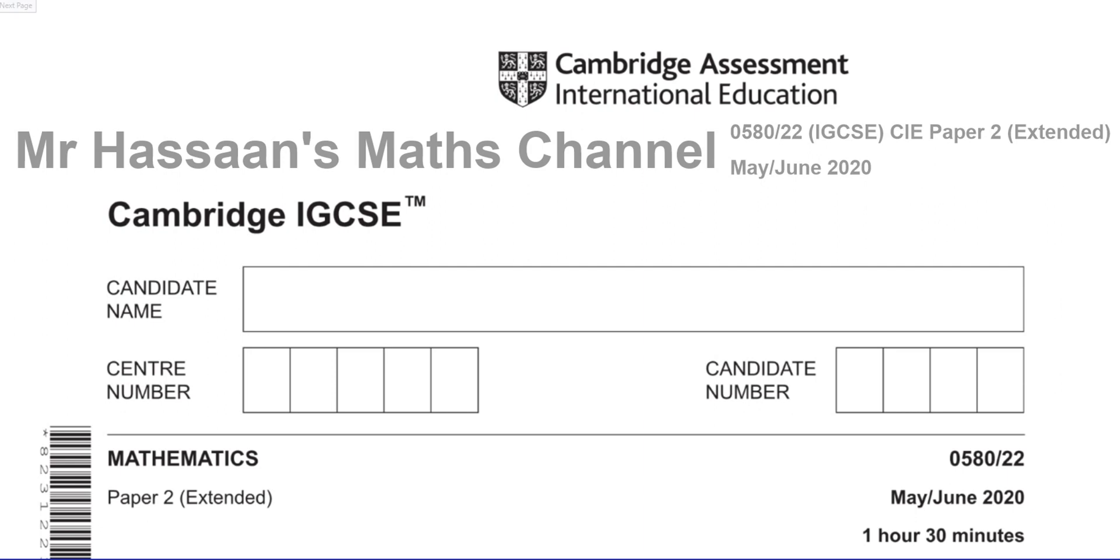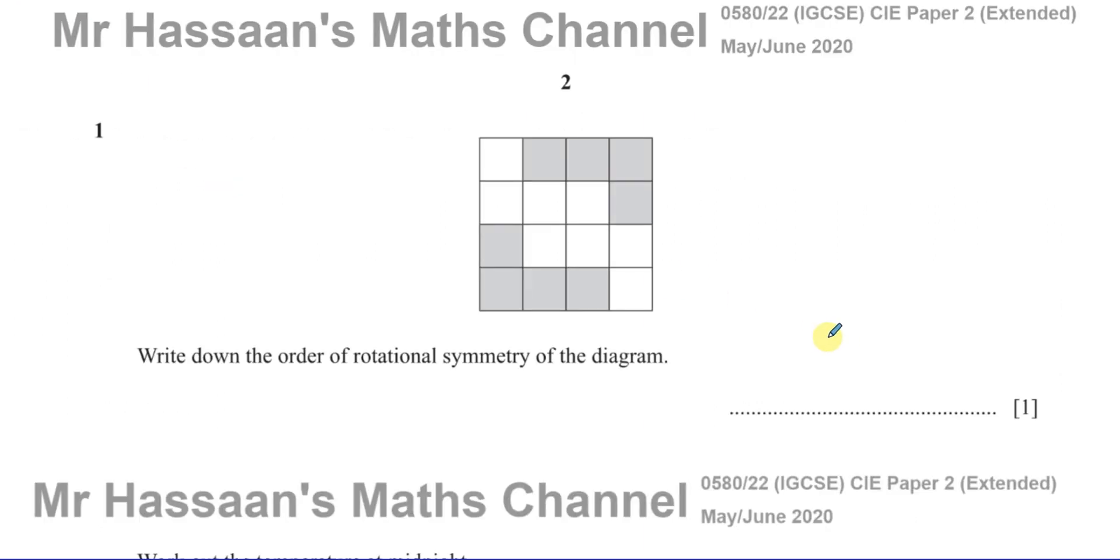So now I'm going to start with question number 1. Question number 1 is about symmetry. It says write down the order of rotational symmetry of the diagram. So we're talking about rotational symmetry and the order of rotational symmetry. Something has rotational symmetry if you can rotate it about its center here, and it fits over its outline more than one time before it reaches its original position again, before it's gone through one whole revolution.